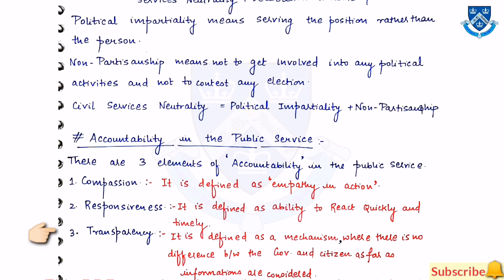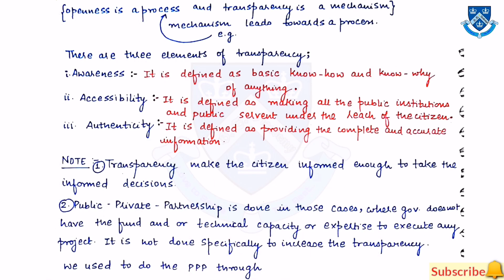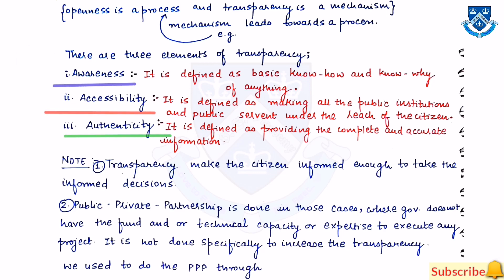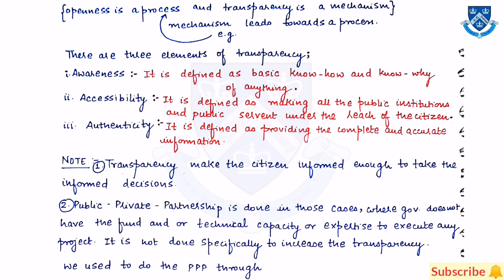Transparency includes three elements. It is defined as the mechanism where there is no difference between the government and the situation as far as information is considered. The three elements of transparency are: first, awareness; then accessibility; and the third one is authenticity. Transparency makes the situation informed enough to take informed decisions.